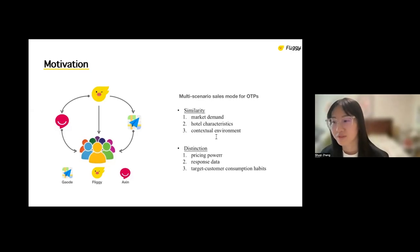At Fliggy, we have three distribution scenarios, one at Fliggy itself, another one at Gaudu, which is a map app, and Ashing, which is a downstream travel product distributor. And all these scenarios share similarities of market demand, hotel characteristics, and contextual environment, while with some distinctions of pricing power, availability of response data, and target customer consumption habits. Our aim is to explore dynamic pricing method that can adapt to multiple scenarios and help to increase revenue.